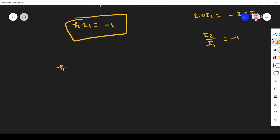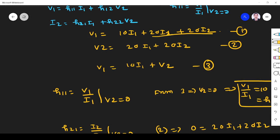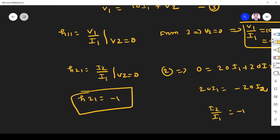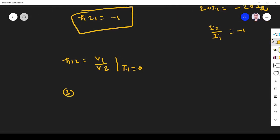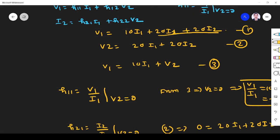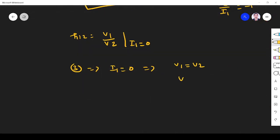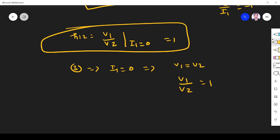h12 equals v1 by v2 when i1 is zero. v1, v2, and i1 should be in the equation. Let's see - v1, v2, i1 should be there. When i1 equals zero, v1 equals v2 from equation 3. From equation 3, when i1 equals zero, v1 equals v2. So v1 by v2 equals 1. So h12 is 1.